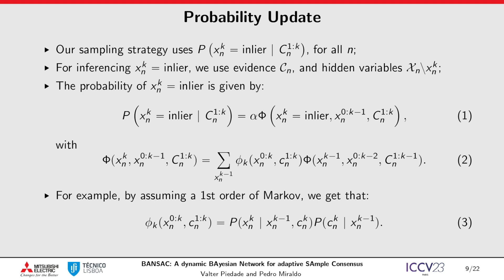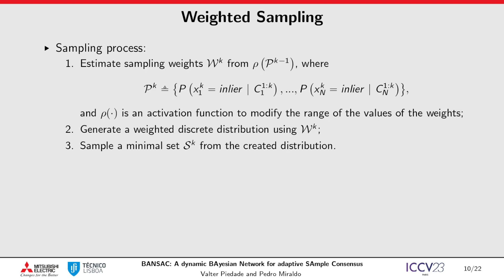In our paper we also test the second and third orders of the Markov assumption. For sampling, we want to use the updated probability values. First, we convert the probabilities into weights in the range of 1 to 100 using an activation function. Then, we generate a weighted discrete distribution from those weights and sample a minimal set from it.